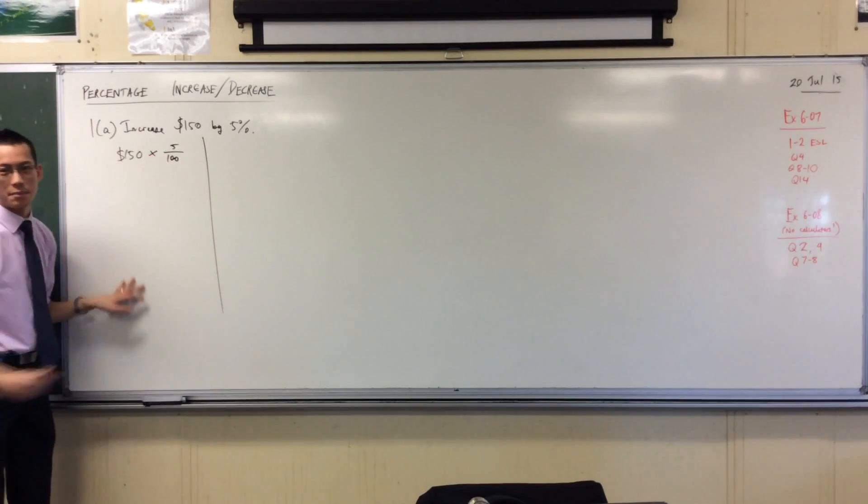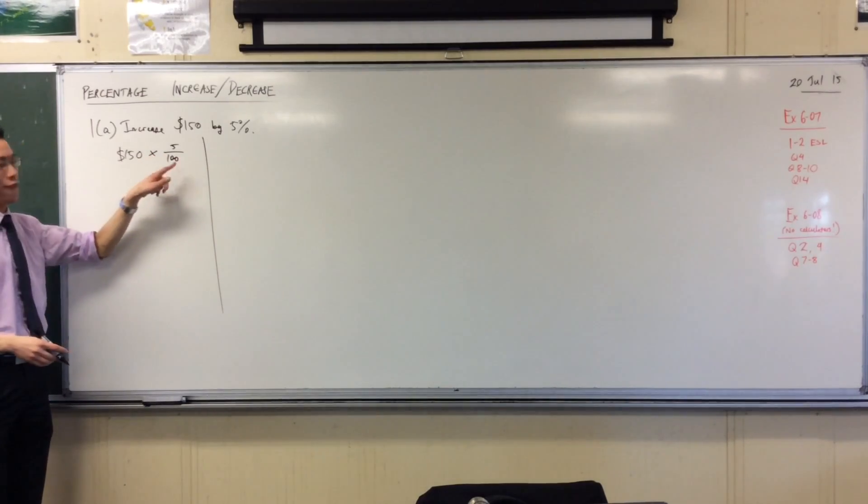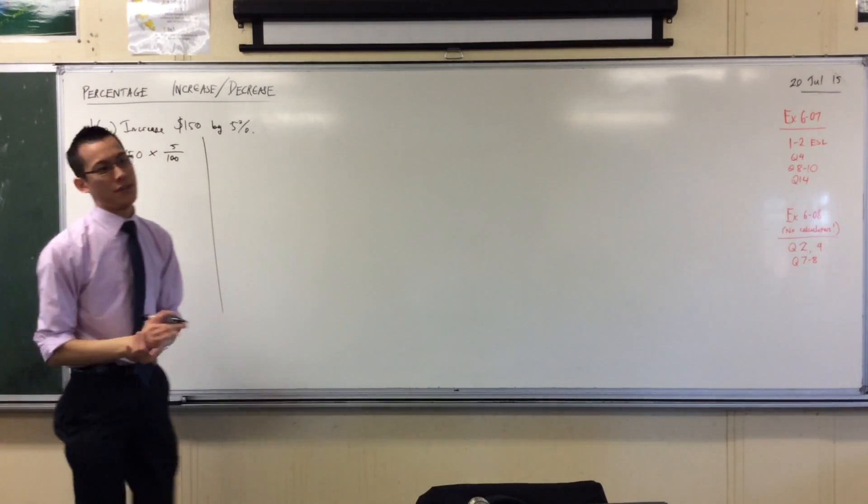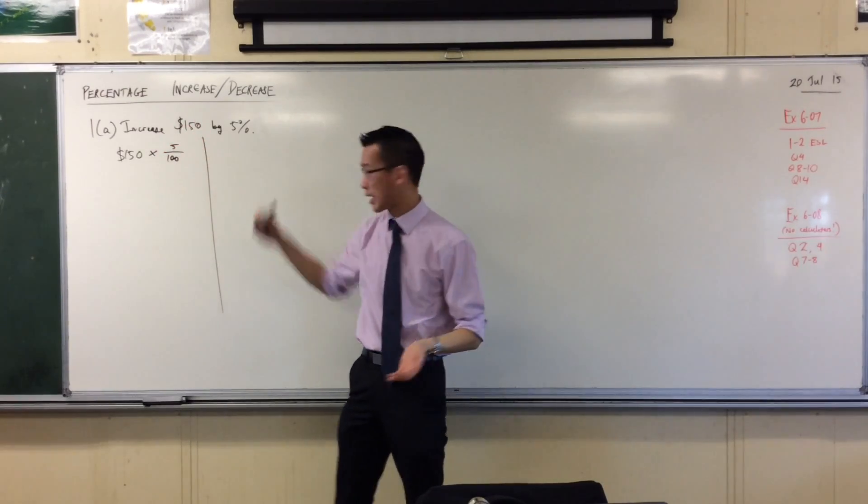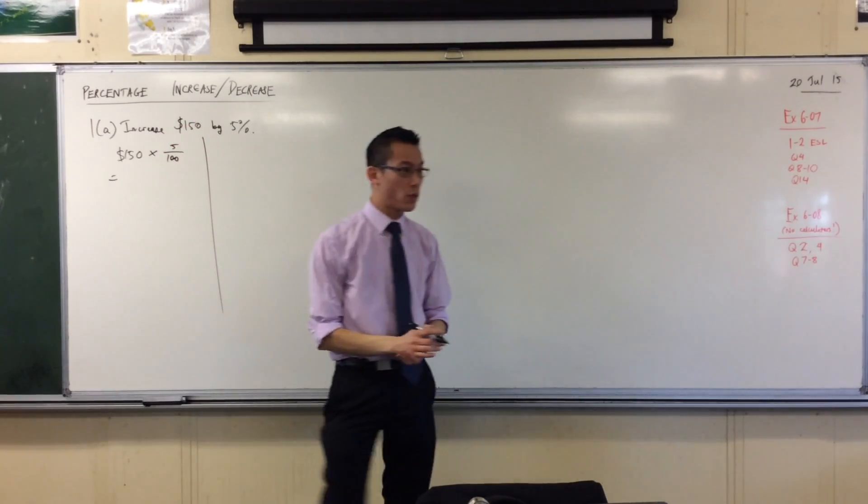So this is going to give me 5% of 150. This is how much increase there is. So I can quickly work this out. You can either do this with your calculator or you might be able to - the numbers are not that hard.